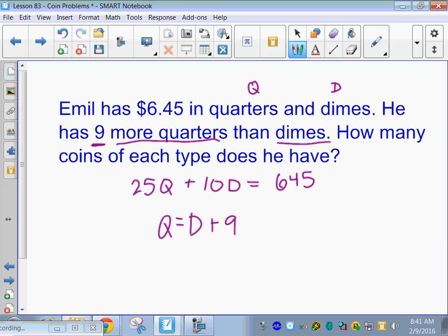He has 9 more quarters than dimes. Very good. Which one does he have less of? Dimes. So, you have to add to the dimes to make them equal, right? So, if we have less dimes, that's what you want to add to and then you have an equal sentence. So, I have more quarters than dimes. Alright.